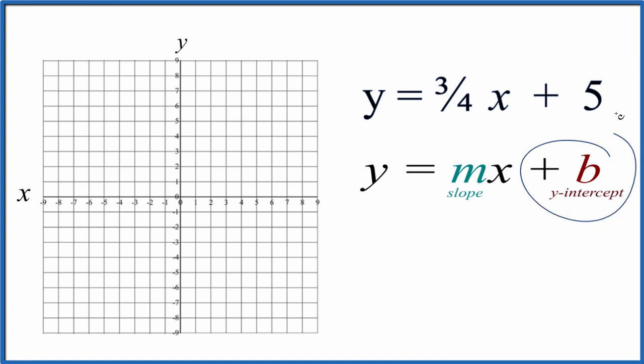Slope-intercept formula. The y-intercept right here is 5. And what we do then is we go over to the y-axis. We go to 5. That's where our line is going to cross the y-axis.